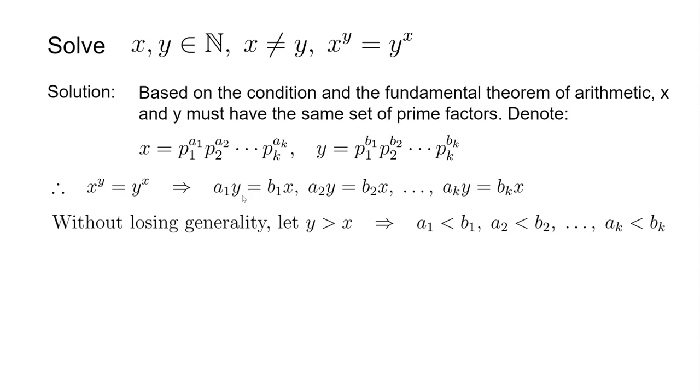If y is larger than x, we look at those equations and notice that because a1 times y must equal b1 times x, if y is larger than x, then a1 is smaller than b1. This is true for all ai and bi, so ai must be less than bi.